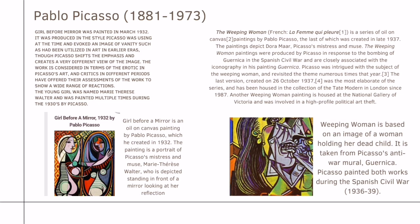Another Weeping Woman painting is housed at the National Gallery of Victoria and was involved in a high-profile political art theft. It is based on an image of a woman holding her dead child, taken from Picasso's anti-war mural Guernica. Picasso painted both works during the Spanish Civil War in 1936–39.